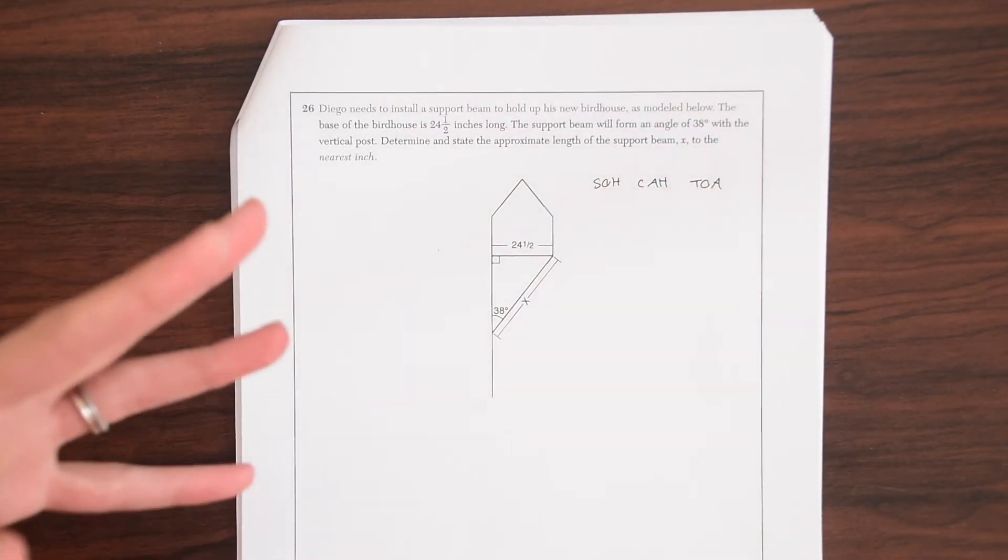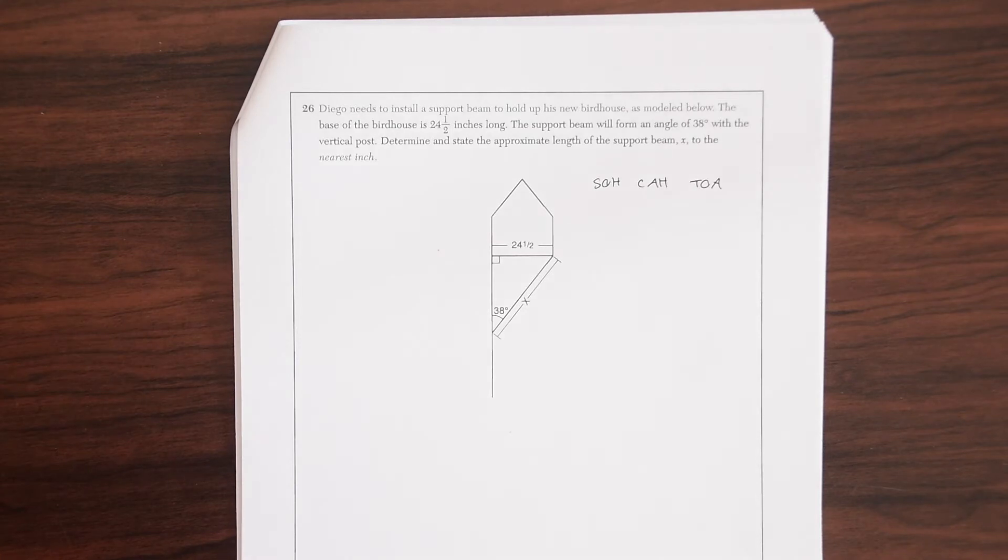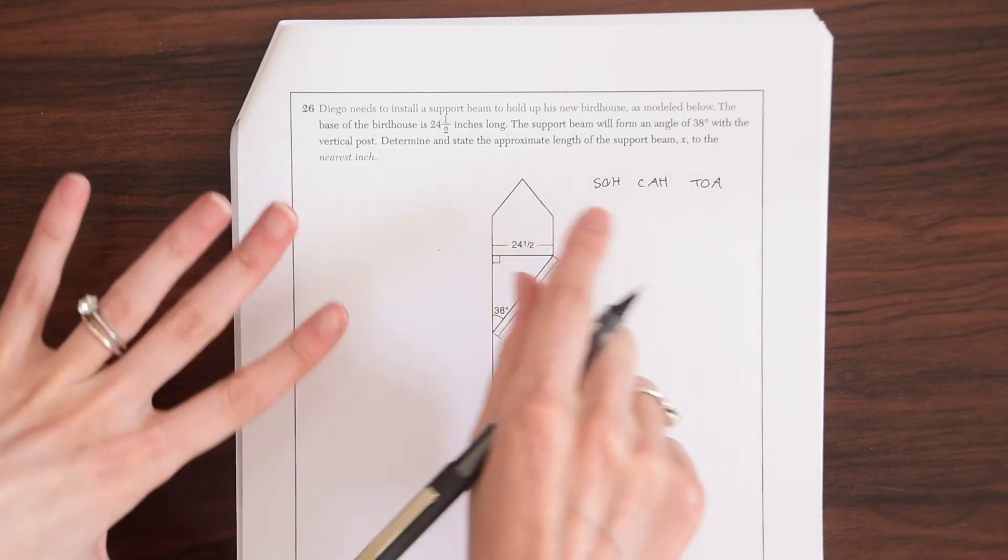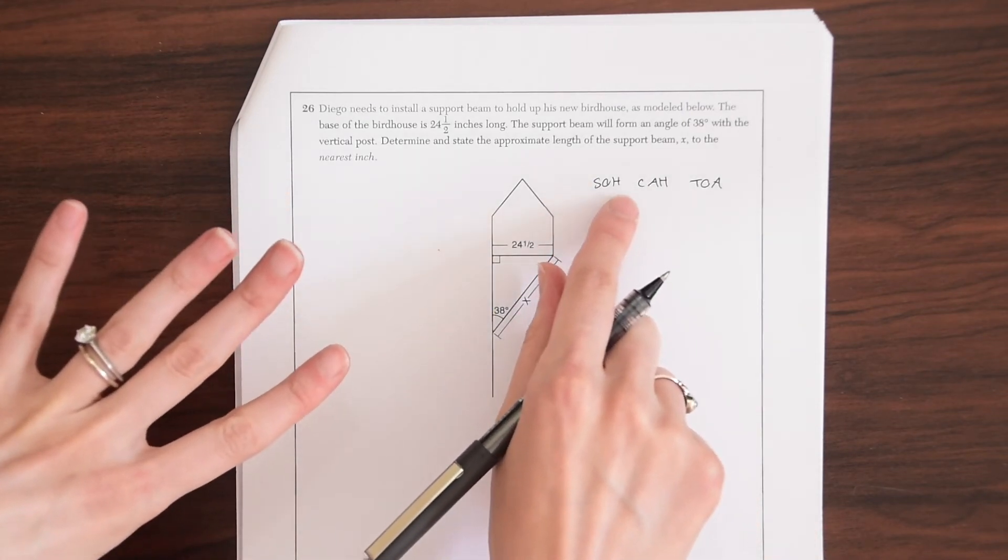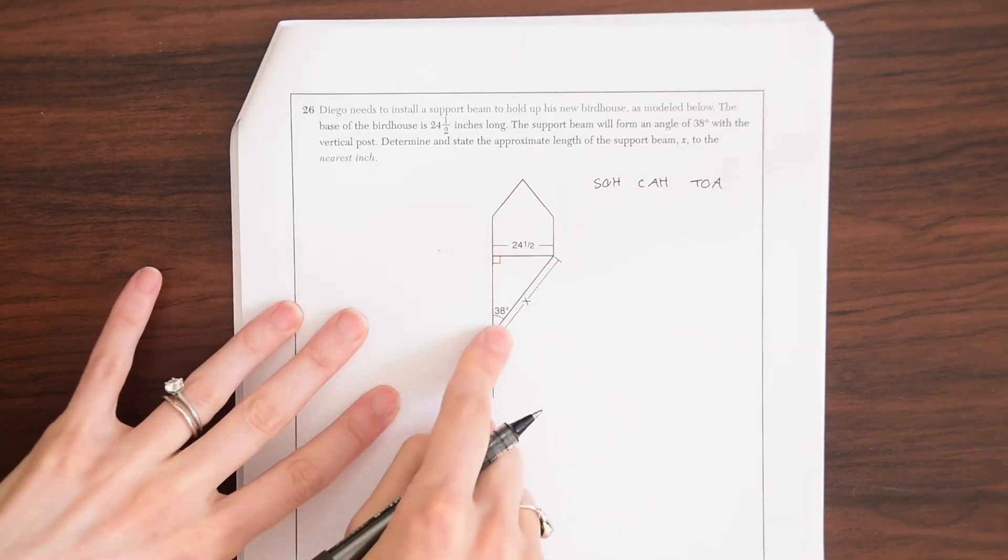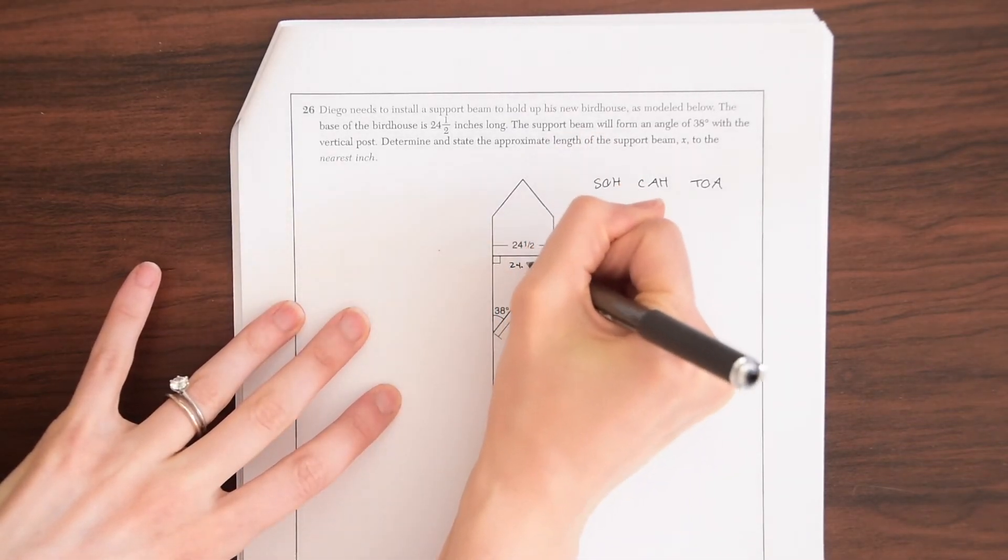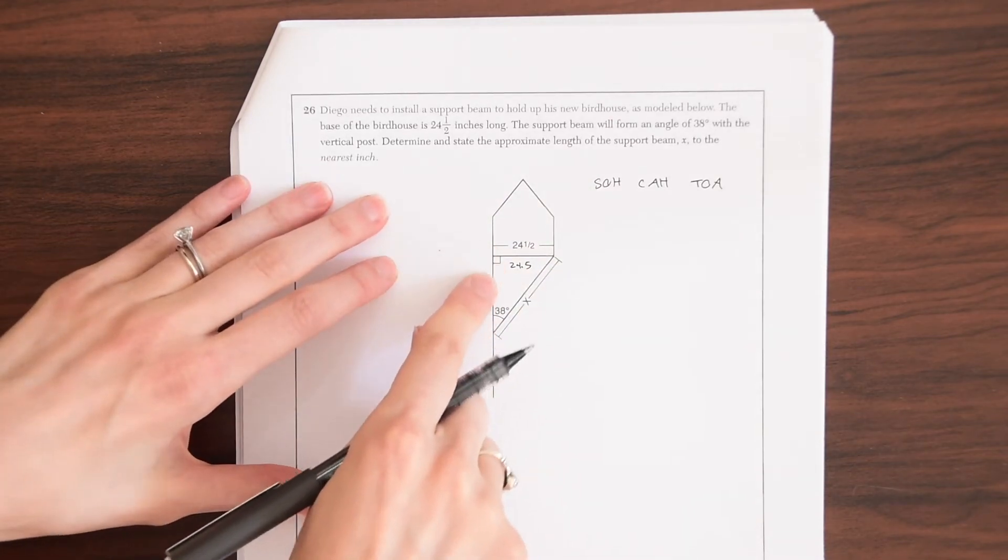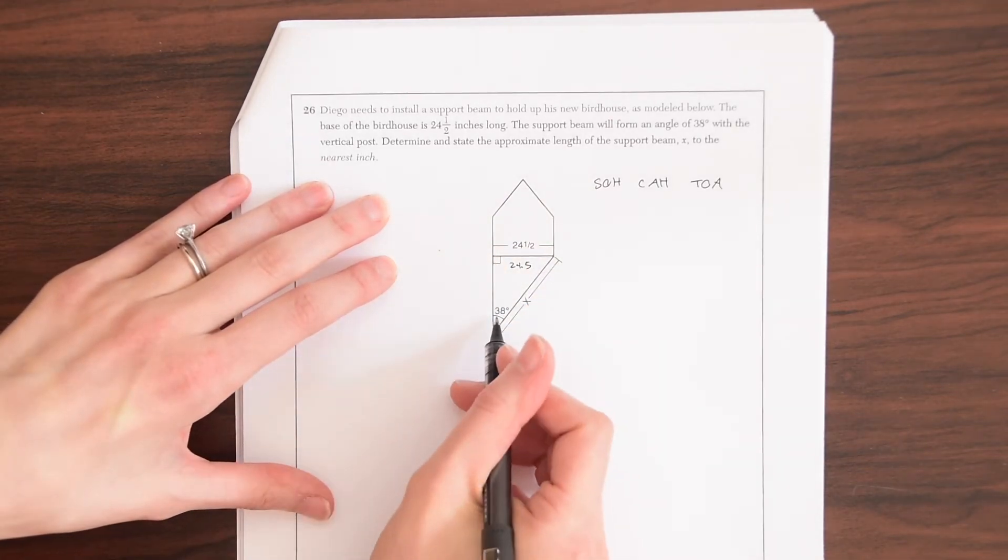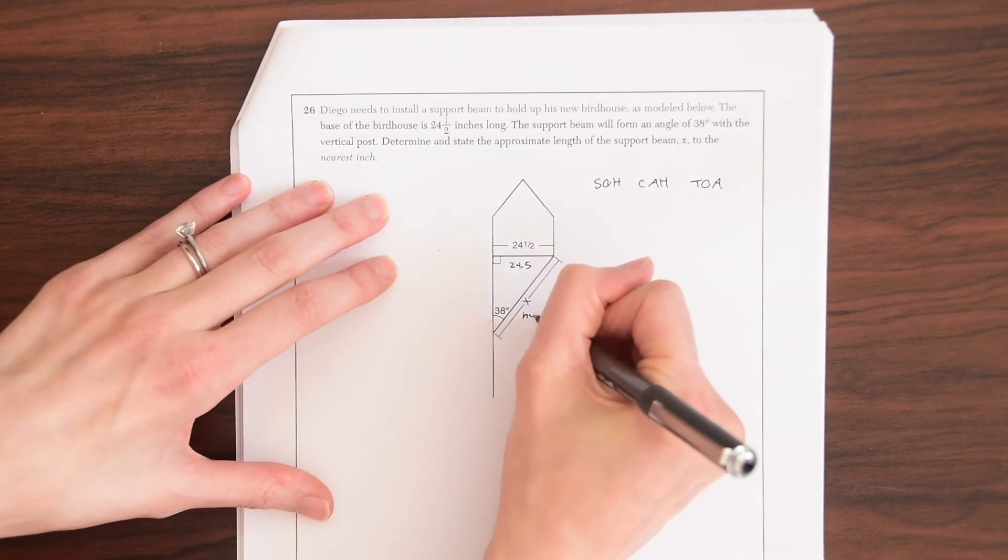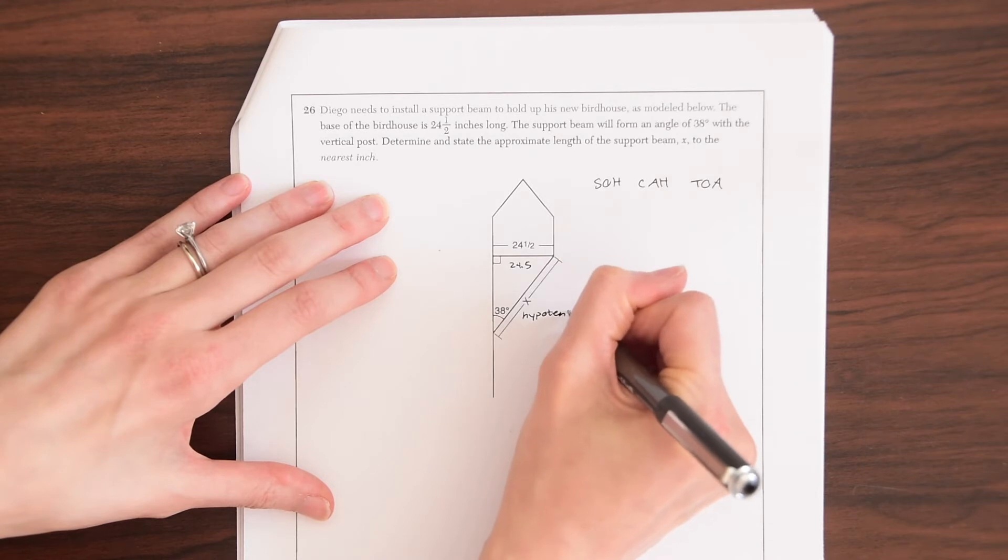I have a video on trigonometry if you want to look at that in more detail. But I'm going to assume that you know what SOHCAHTOA means from here. Sine, cosine, tangent, and then we have opposite, hypotenuse, and adjacent. That's what each of these mean. So looking at this, we need to find this length. We know that this is 24.5. And we know that we can use SOHCAHTOA here because we are dealing with a right triangle. So we're given this angle here and we want to know the hypotenuse. This is the hypotenuse, the value of the hypotenuse.